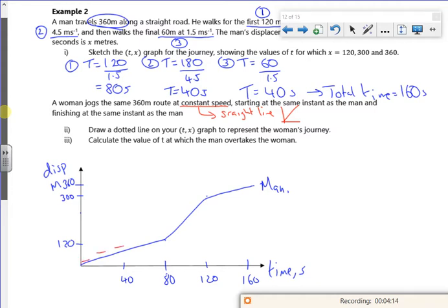So we've got to do a dotted line for this, from the start to the finish. You've got a ruler. That kind of looks right. So here's the woman. At this point here, the woman's in the lead because her displacement is higher. At this point here, this is the point where they overtake.